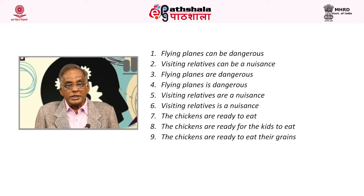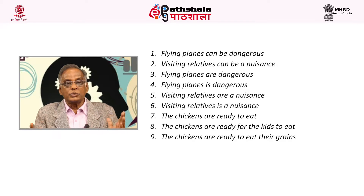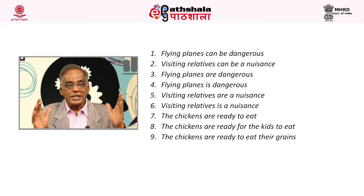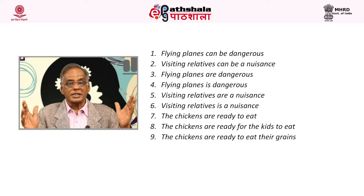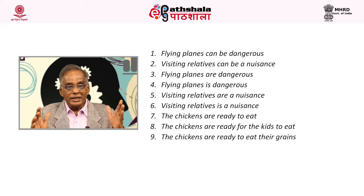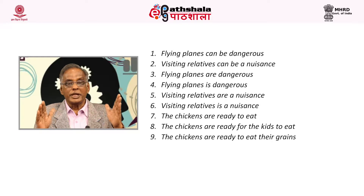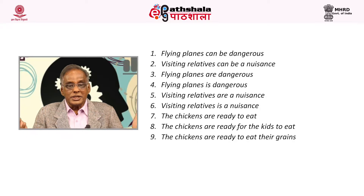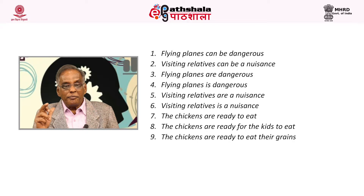The sentence has two interpretations: 'The planes which fly can be dangerous,' or 'For someone to fly planes can be dangerous.' The moment you change 'can' to 'are' — 'Flying planes are dangerous' — this has only one interpretation: flying works like a participle, and planes that fly are dangerous. And if you put 'is' in place of 'can,' you say 'Flying planes is dangerous,' which has the interpretation 'For someone to fly planes is dangerous.' Similarly, 'Visiting relatives are a nuisance' could mean relatives who visit are a nuisance, or for someone to visit relatives is a nuisance. You can disambiguate this sentence by having 'are' in one interpretation and 'is' in another.